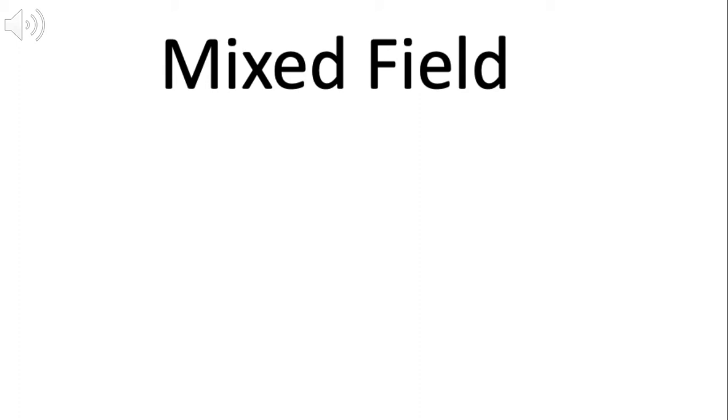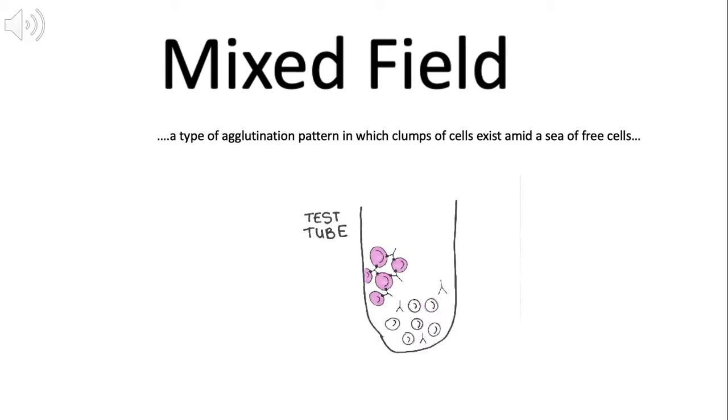Mixed field is a type of agglutination pattern in which clumps of cells exist amid a sea of free cells. The schematic in this slide at the bottom is a basic illustration behind the mixed field concept.